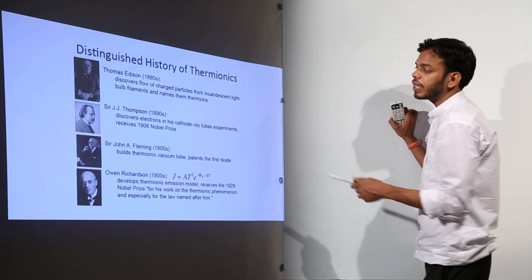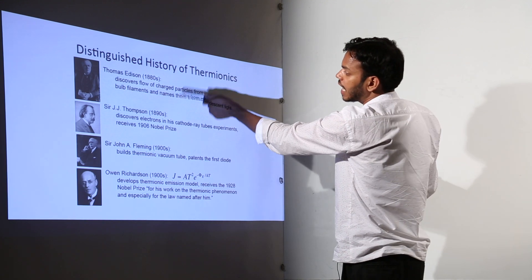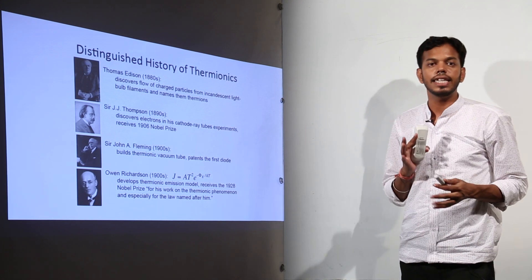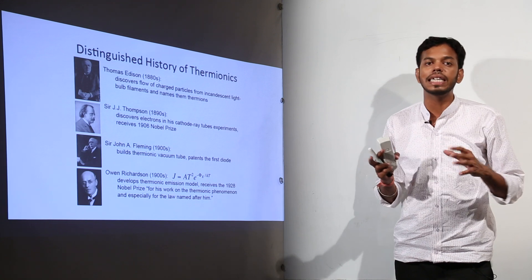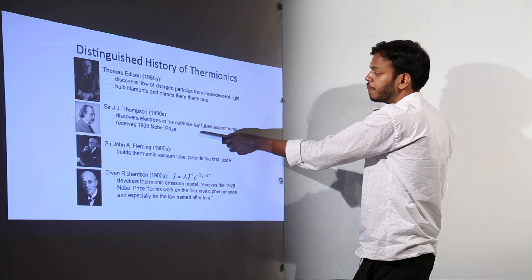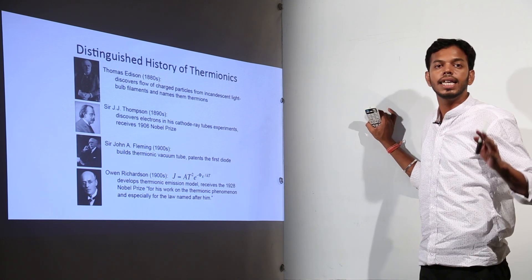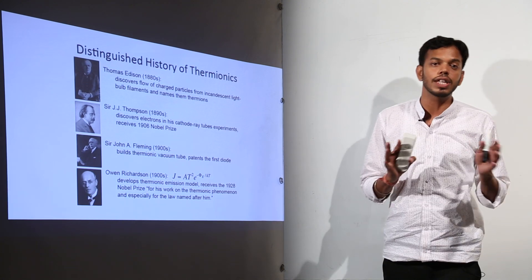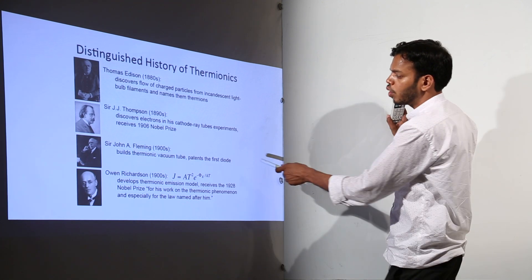After that, Sir J.J. Thompson in 1890s. Basically 10 years after, he already has his proof that something is coming out but he is not sure what. So he named it thermions. 10 years after that experiment, J.J. Thompson discovered electron and now most of the things were clear.